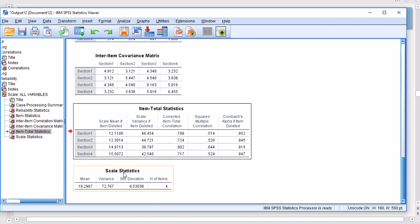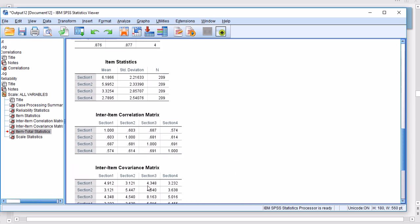So finally, we have got scale statistics, where the mean of all numbers, all sections together is 18.2967. That's with the variance of, then we have got the scale statistic. The variance of the scale statistic is 7.72767, and standard deviation and the number of items are also presented.